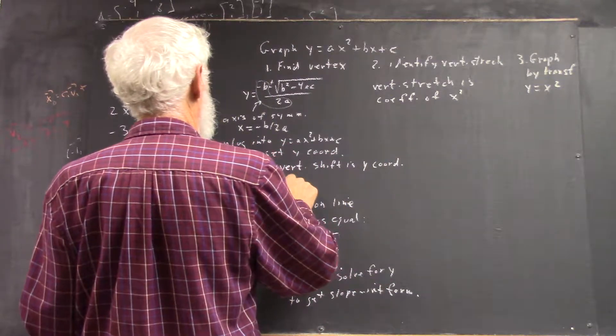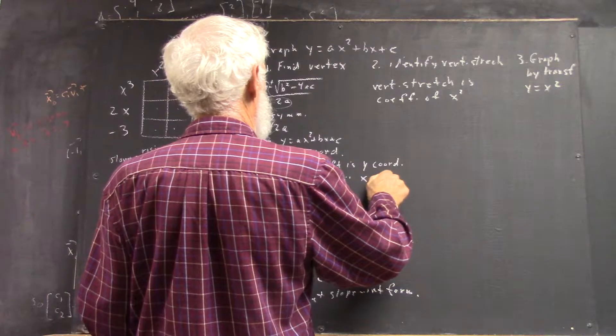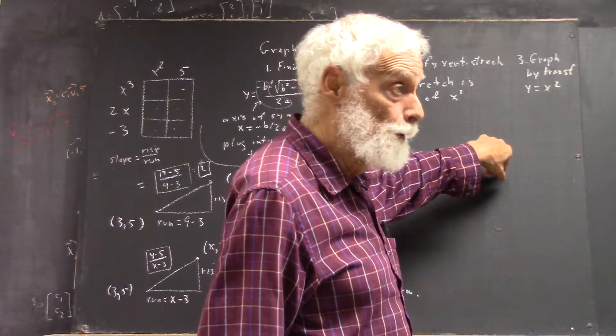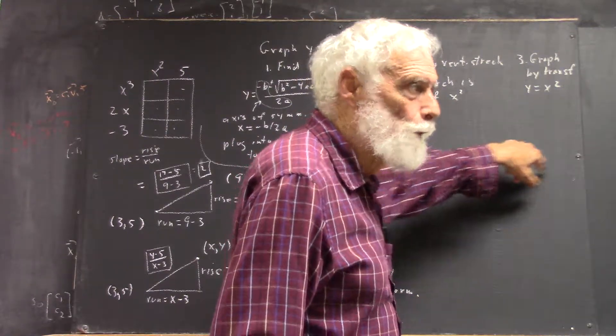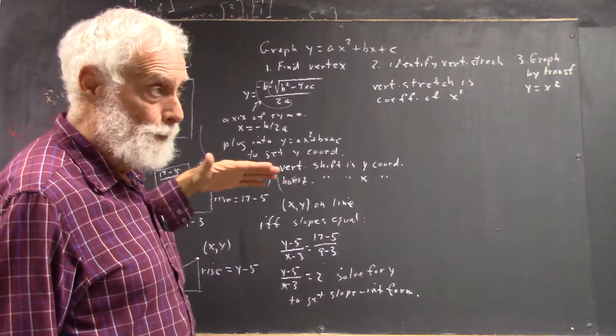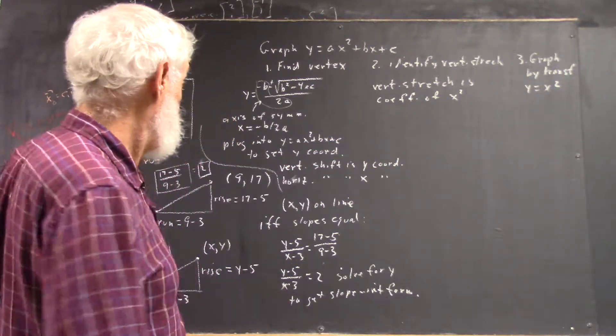Vertical shift is the y-coordinate, and the horizontal shift is the x-coordinate, right? Because the vertex of this graph is 0, 0, you've got to move the vertex to the point you've got here. So you've got to move it horizontally, you've got to move it vertically to that point.